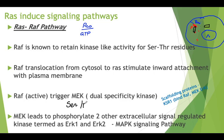By dual specificity, MEK not only phosphorylates serine and threonine but also has the ability to phosphorylate tyrosine components. So serine, threonine, and tyrosine amino acid kinases are all being phosphorylated by MEK, meaning it phosphorylates a wider range of proteins.